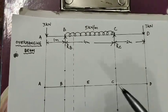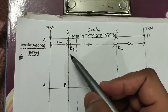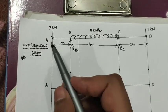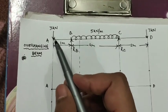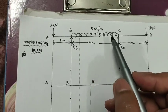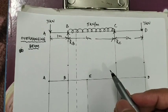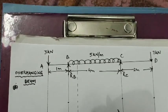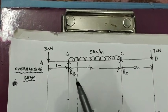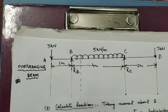Consider an overhang beam with two supports at point B and at point C. Two point loads are acting at point A and D, and one UDL is also acting. In this problem I will give you the concept of how to find the point of contraflexure. First of all we will start with finding the reactions at points B and C by using the equations of equilibrium.